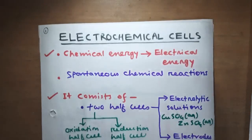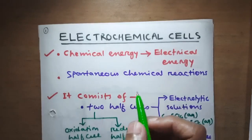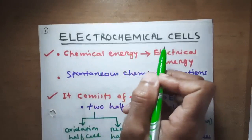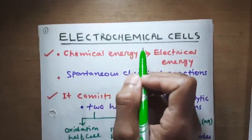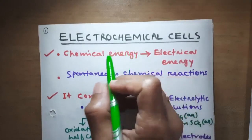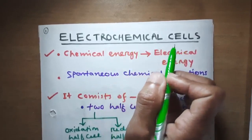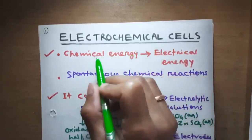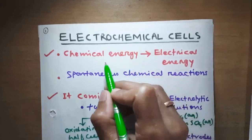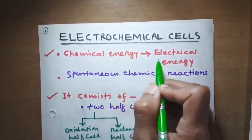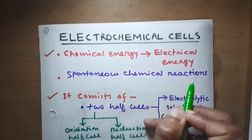Hello students, my name is Om Lan. Today I am going to explain an electrochemical cell, which is one of the very important topics of electrochemistry. An electrochemical cell may be defined as an arrangement which can convert chemical energy into electrical energy through a spontaneous chemical reaction.